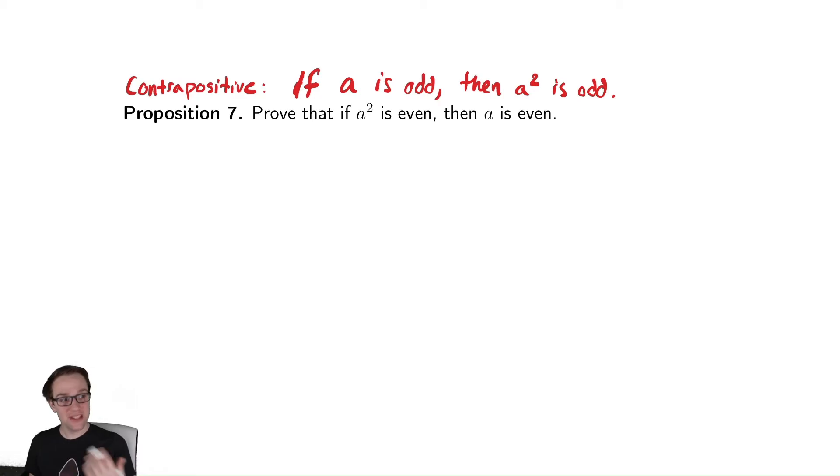So now this looks like it might be more promising because now I can start with A and then square it afterwards. And squaring is easier for me to deal with. We've already dealt with such things in the past. So for my proof, usually when you do a proof by contrapositive, you make that claim at the start of the proof.